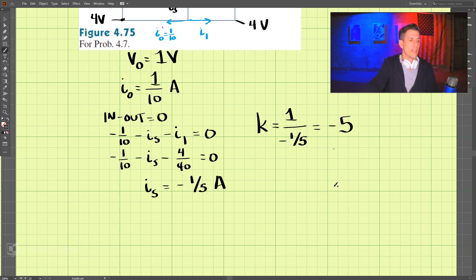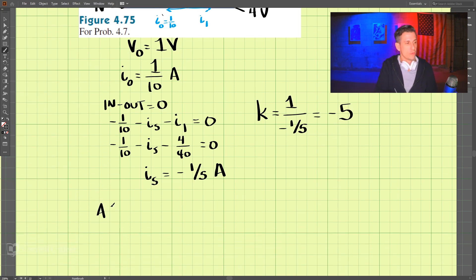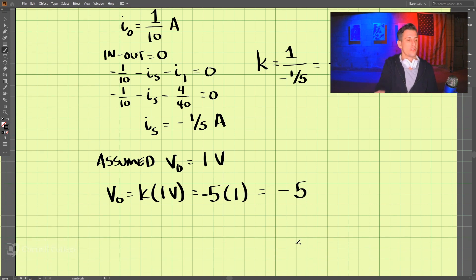So if we assumed V0 is equal to 1 volt, we need to say V0 is equal to K times 1 volt here. So that is equal to negative 5 times 1, which equals negative 5. So the solution to this problem is V0 is equal to negative 5 volts.